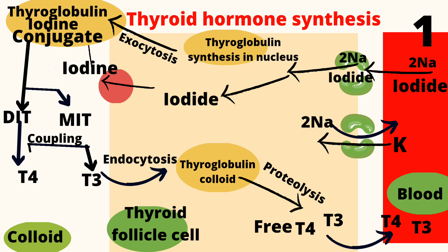Oxidation converts iodide to iodine. This iodine causes the iodination of tyrosine residues of thyroglobulin to form monoiodotyrosine (MIT) and diiodotyrosine (DIT), a reaction carried by thyroid peroxidase. Following this, coupling of iodine molecules within thyroglobulin takes place to form T4 and T3, also carried out by thyroid peroxidase.